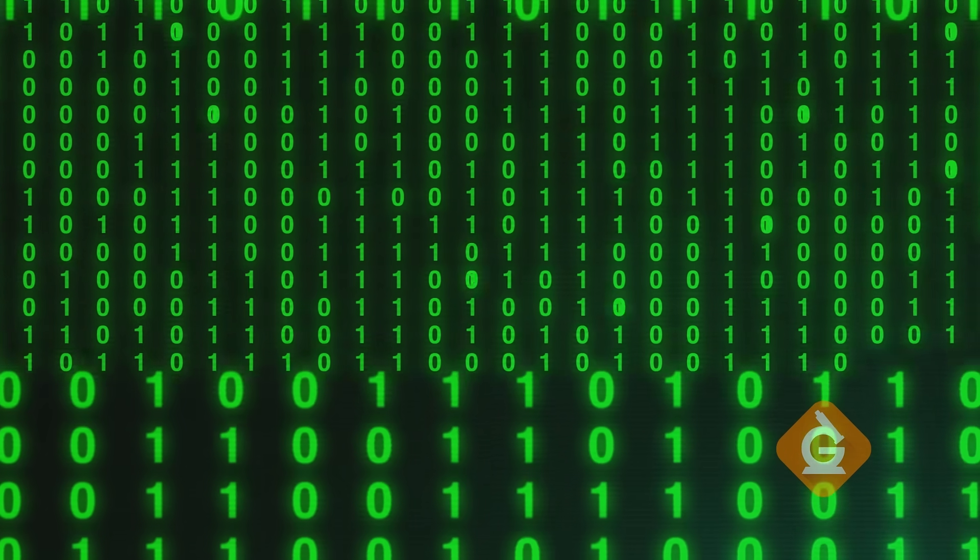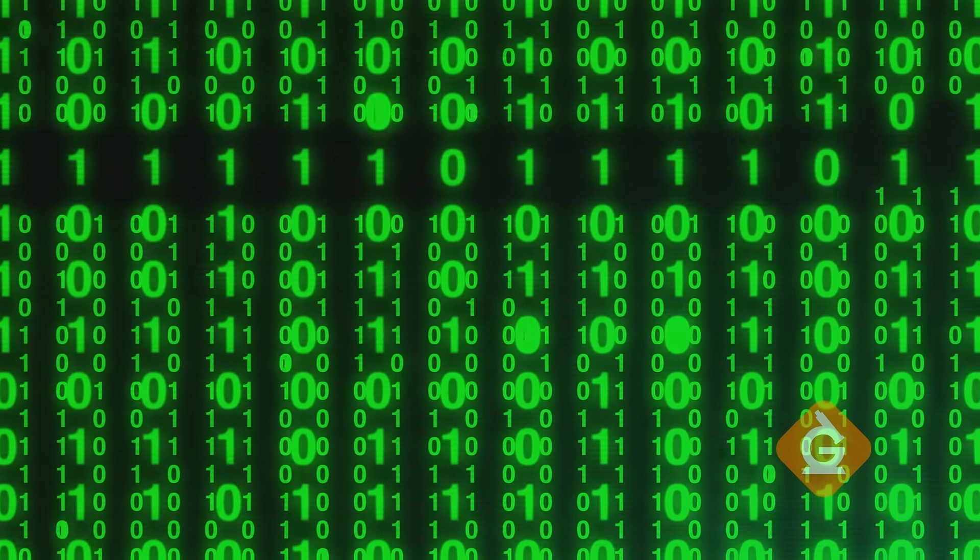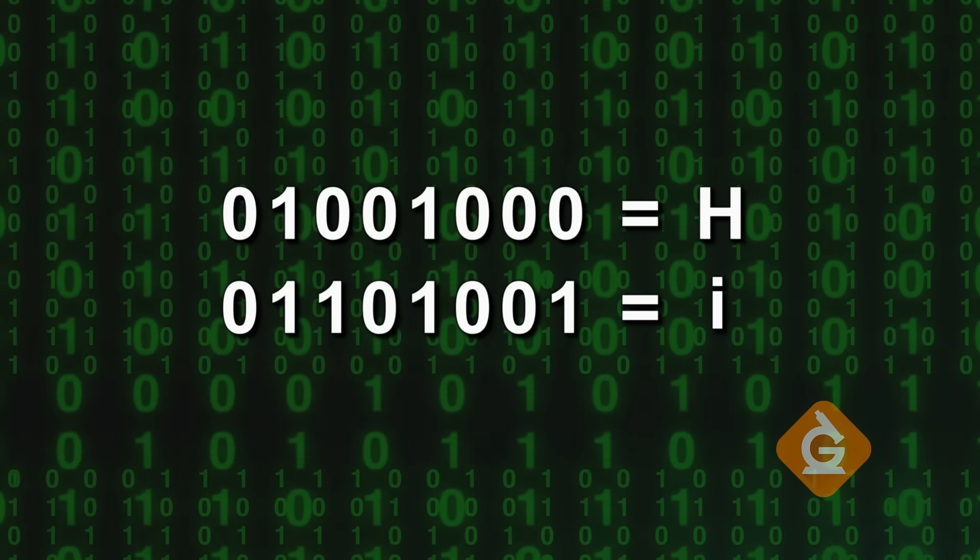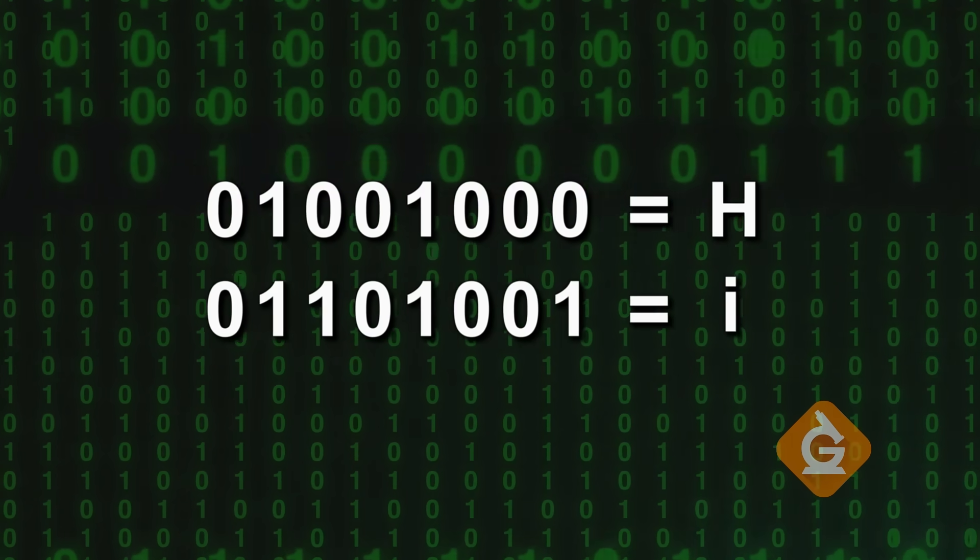Instead of dots and dashes, our devices use a simple language made of only two symbols. Ones and zeros. Like Morse code, the ones and zeros are used in patterns and can be translated to letters. Hey kids!